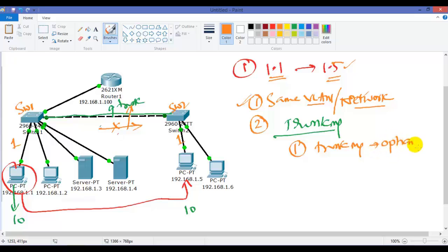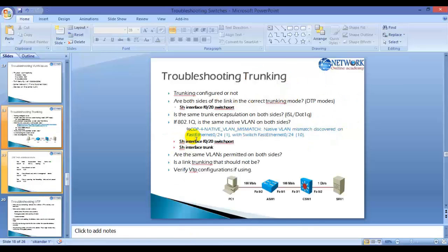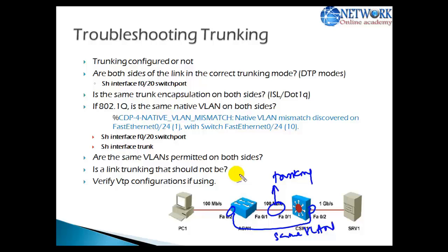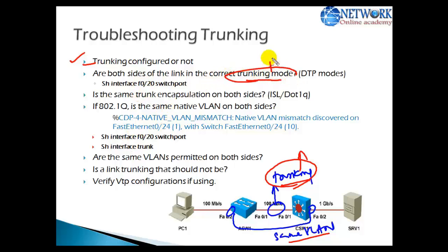The first thing I suggest you check is whether the trunk link is configured or not — is the link between the two switches confirmed with trunking? Both ports must be on the same VLAN. Even if trunking is configured, any misconfiguration inside your trunking will affect communication. The next thing to check is the trunking modes. If you have a misconfiguration of DTP modes, it can still affect communication between your devices.